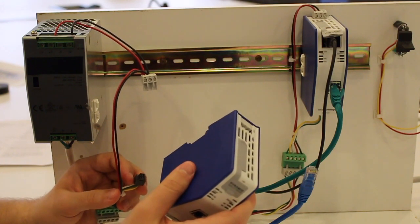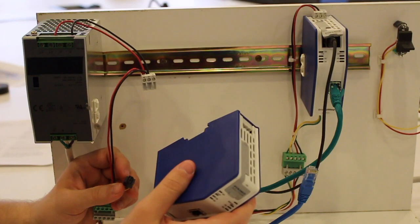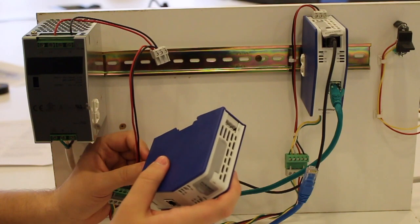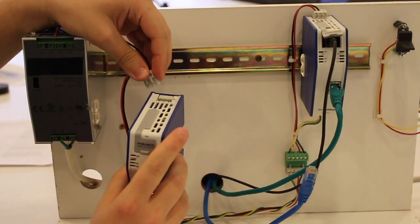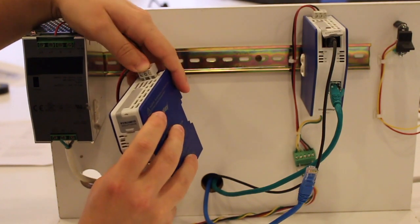Now that we've confirmed our network termination is correct, with the power off, we can attach our connectors. First, plug the six-pin terminal block connector into its port at the bottom of the unit. Then plug the three-pin terminal block connector for power into the top of the unit.